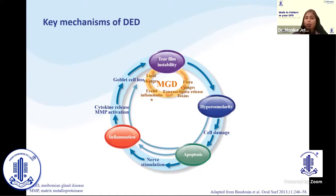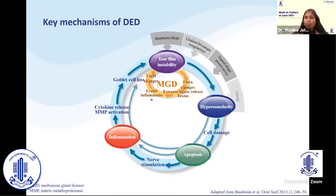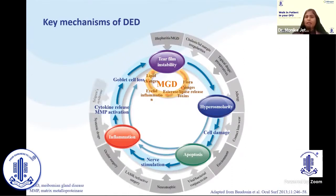This inflammation leads to activation of the MMP pathway, which in turn leads to goblet cell loss. In this vicious cycle, we understand that it affects all layers of the tear film: goblet cell loss impacts the mucin layer, aqueous is deficient, and the tear film becomes unstable. There are multiple factors which can result in tear film instability.